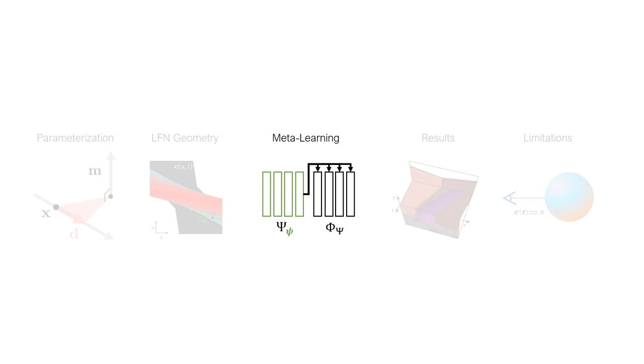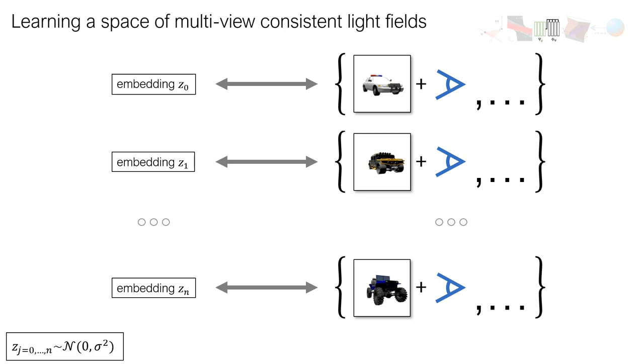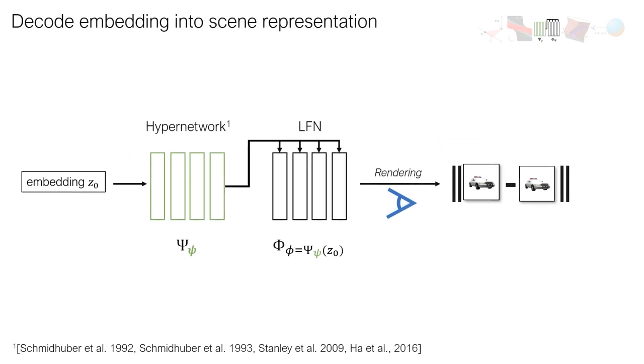In our approach, we leverage the autodecoder framework. Specifically, for each scene in our training set, we initialize a low-dimensional latent code which we use to condition the LFN. Here, we leverage a hypernetwork, a neural network that takes the latent code as input and predicts the weights of our LFN.